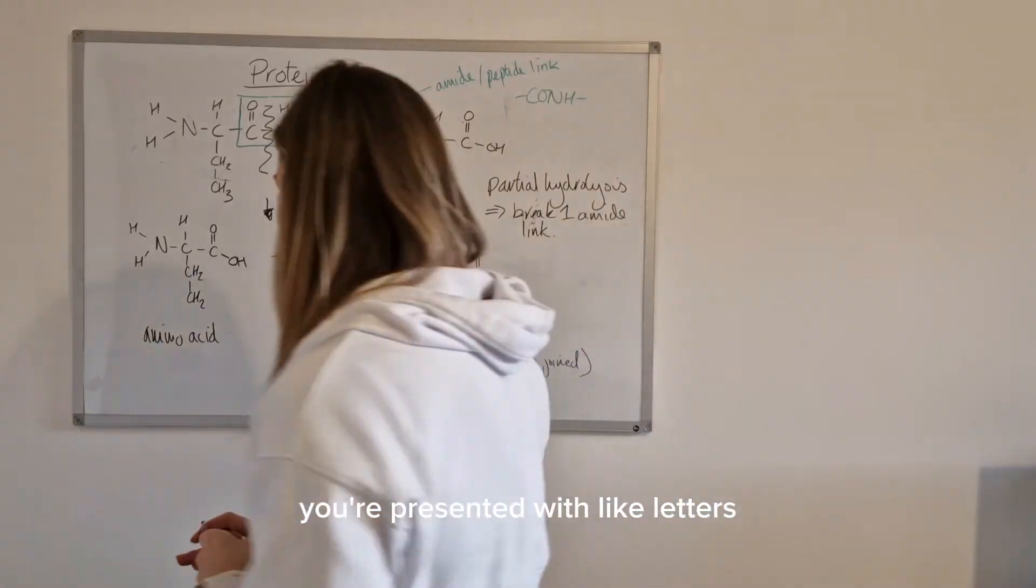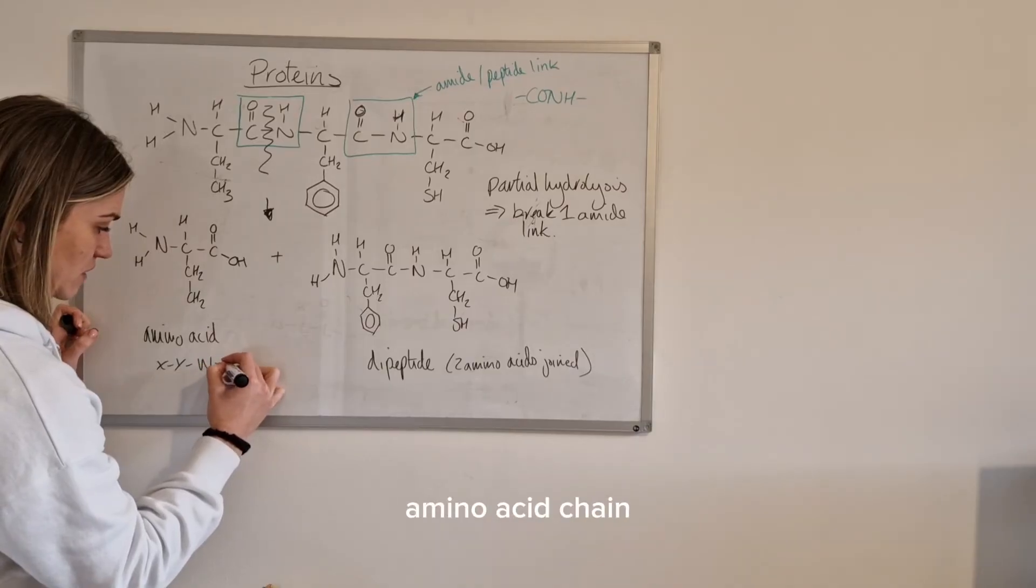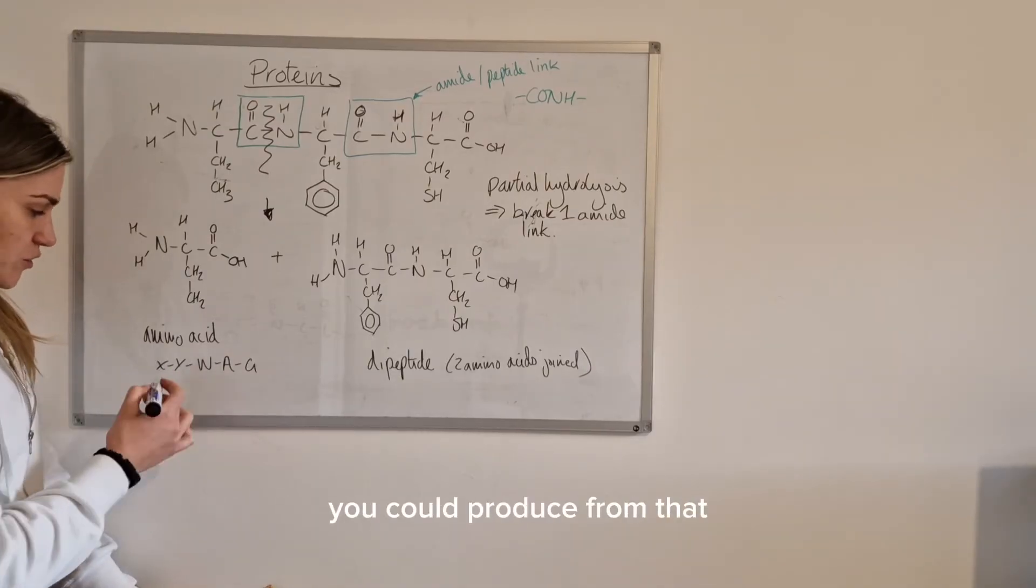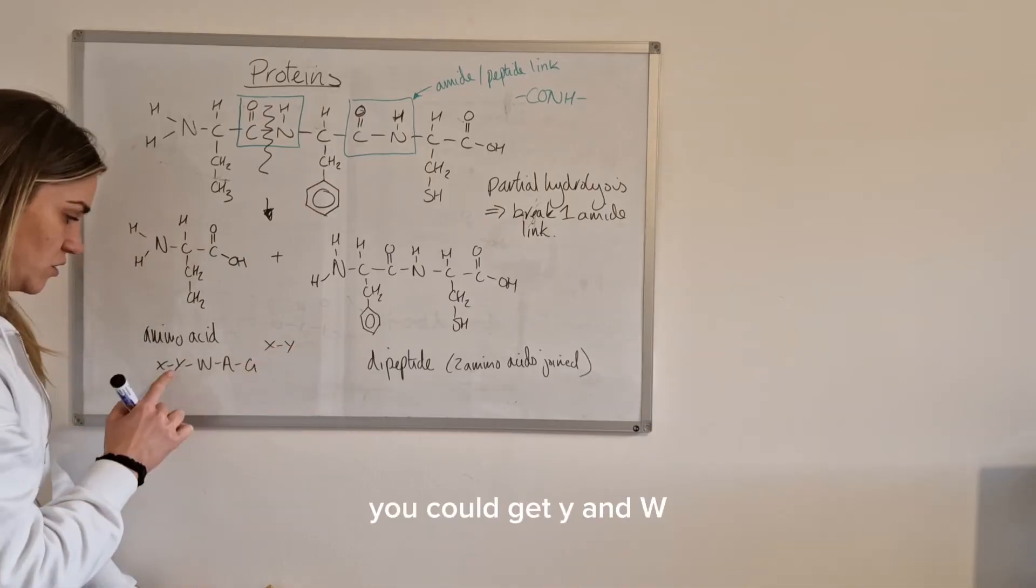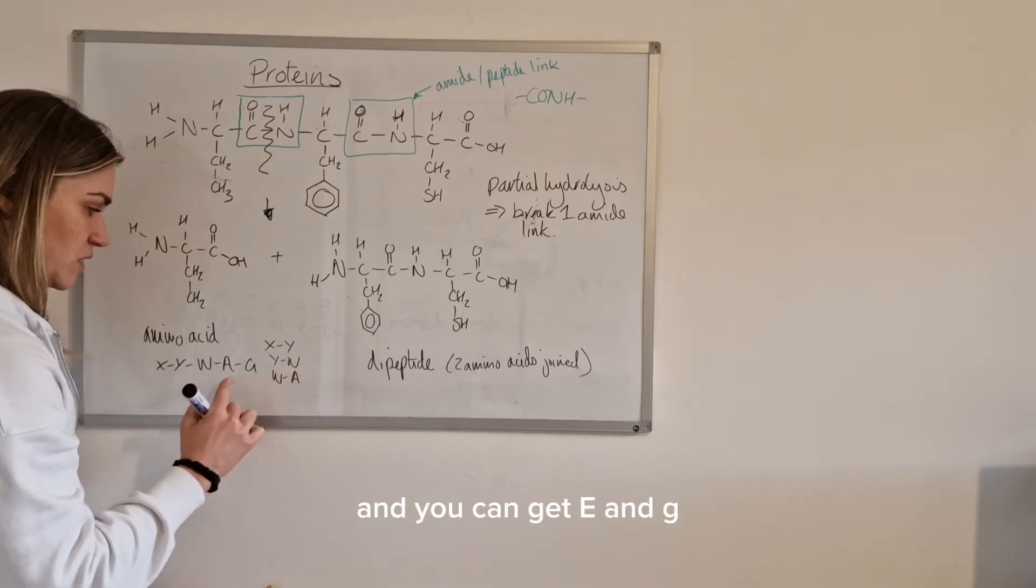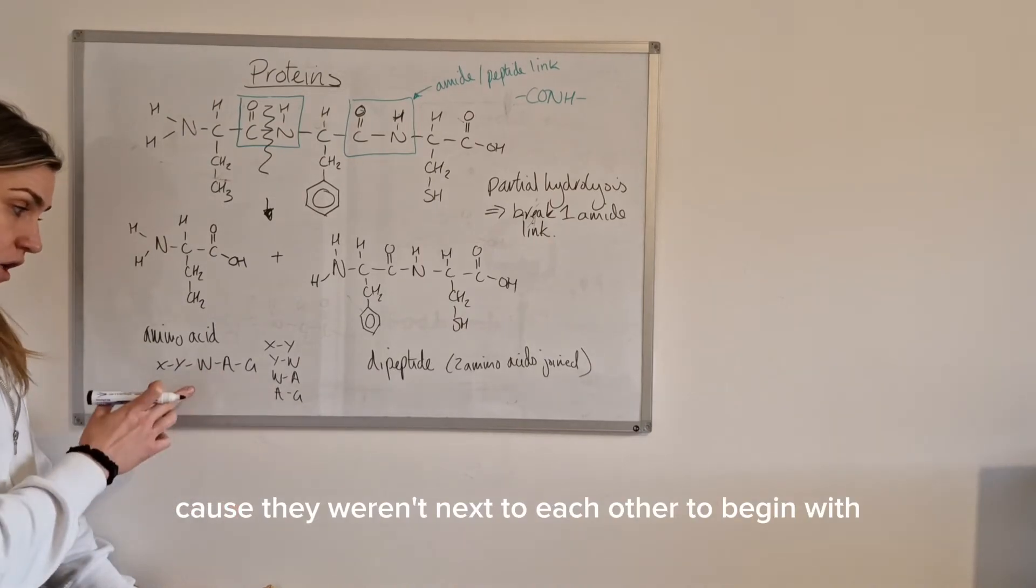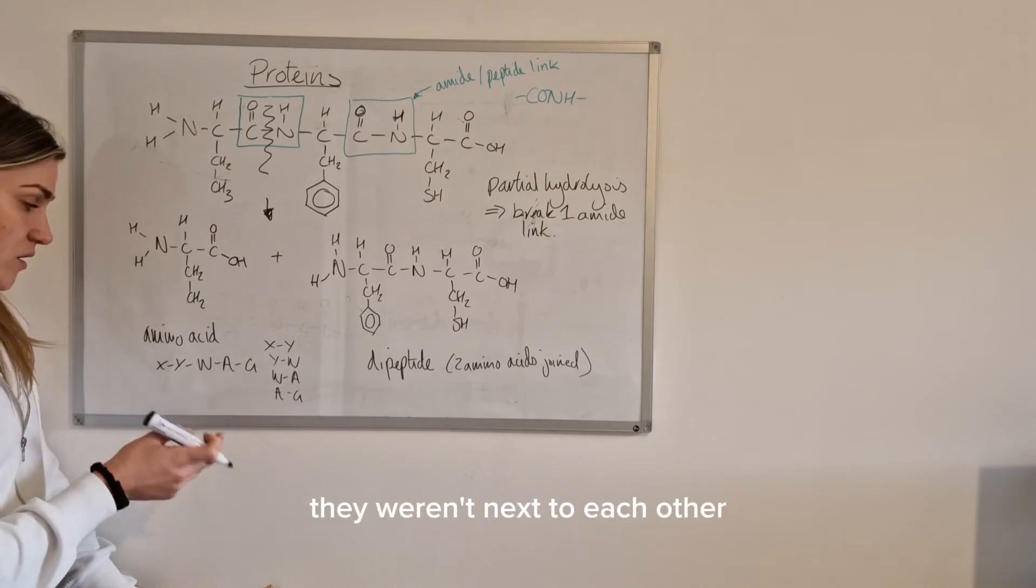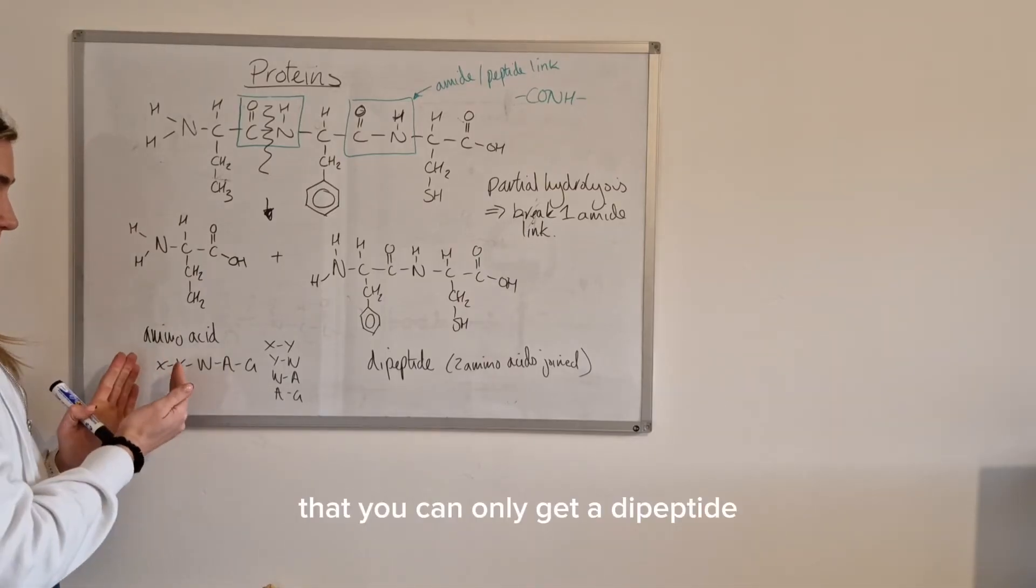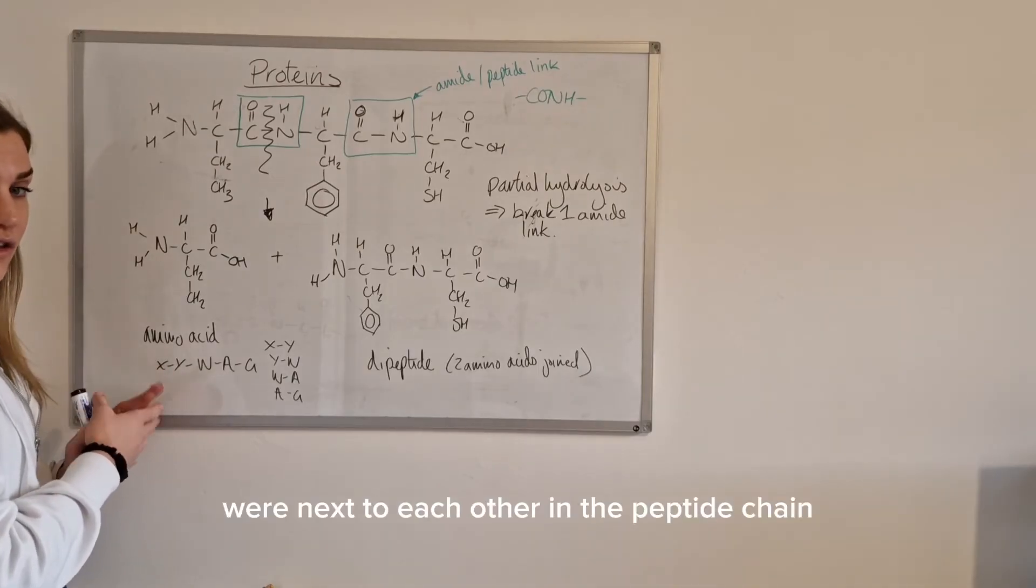For example, just say you've got an amino acid chain that has like this letter combination. If you were to look at the dipeptides you could produce from that you could get X and Y, you could get Y and W, you could get W and A and you could get A and G. But that's the only options. You couldn't get G and W because they weren't next to each other to begin with. You couldn't get A and Y because again they weren't next to each other in the peptide chain and you couldn't get W and X either. So you hopefully get the idea, okay, you can only get a dipeptide of that specific amino acid combination if the amino acids were next to each other in the peptide chain.